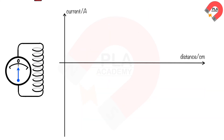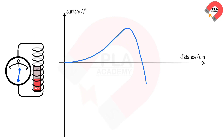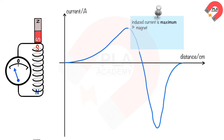When a magnet is dropped from rest and passes through a solenoid, it induces an increasing current until it reaches a maximum when the magnet is entering the solenoid. The induced current then decreases to zero at the middle of the solenoid, then reverses direction and increases to another maximum when the magnet exits the solenoid, before decreasing to zero again as the magnet moves further away. The induced current is maximum when the magnet is entering, because the magnetic field strength is strongest at the poles and the magnet's speed increases due to gravity.